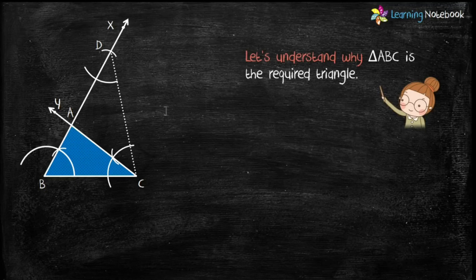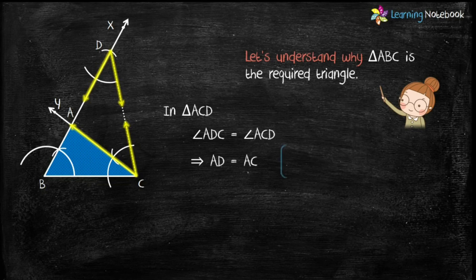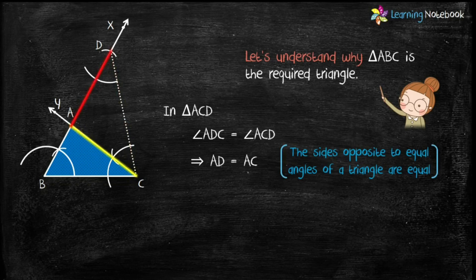In triangle ACD, we have constructed angle ADC equals to angle ACD. This implies AD equals to AC, because the sides opposite to equal angles of a triangle are equal.